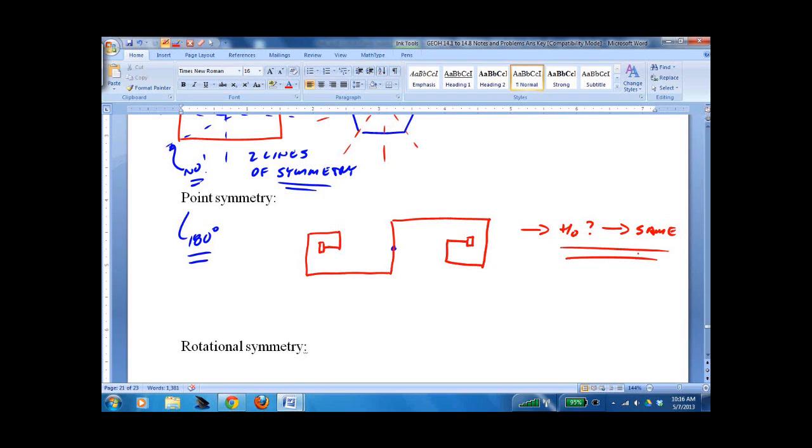What we call an odd function in algebra. So you literally want to take the page, give it a half turn and say, does it look exactly the same? That would make it point symmetrical.